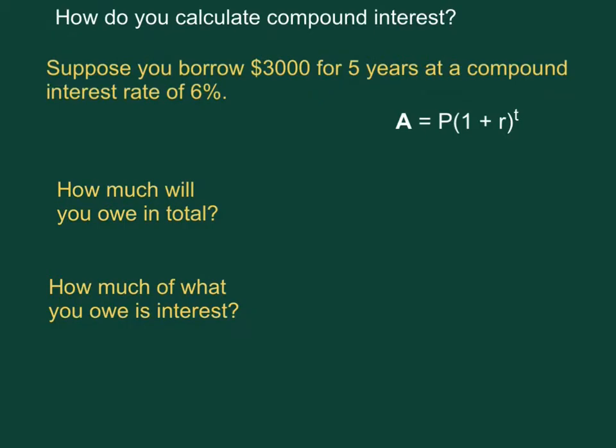To calculate compound interest you need much of the same information. You need to know the principal. That's our $3,000. You need to know the time period. That would be the five years. And you need to know the interest rate. That would be 6% or remember to write it as a decimal .06. Now the formula for compound interest is A equals P times 1 plus R to the T.